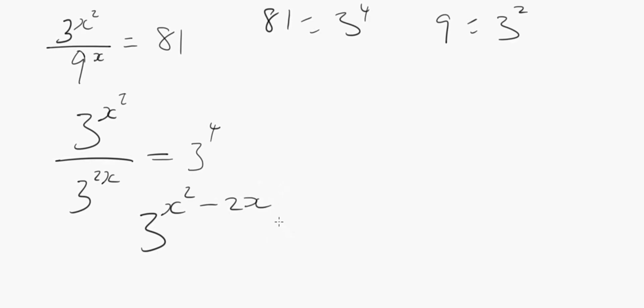Okay, we have equals 3 to the power 4. Okay, so we have a common base, so this will cancel. This, we are left with x squared minus 2x equals 4. Okay, so this is what we are going to have.